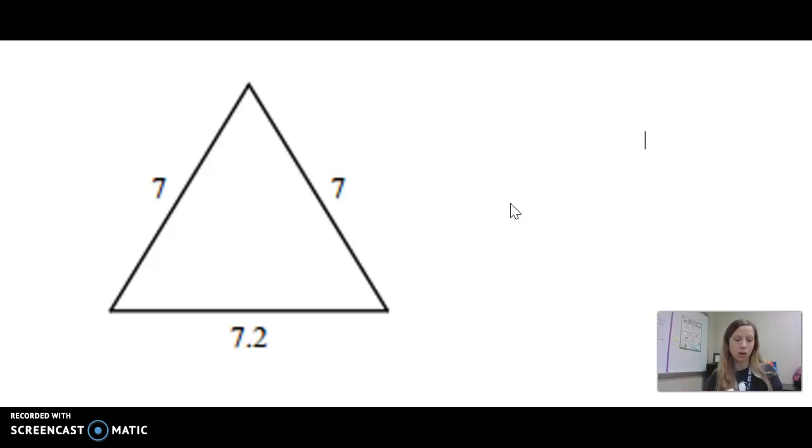Now if you recall in our last video we talked about how an altitude is when you start at a vertex and you draw a line that is perpendicular to the side across from it. And that is called the altitude, I'm going to label it A.